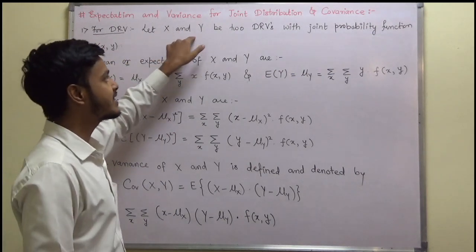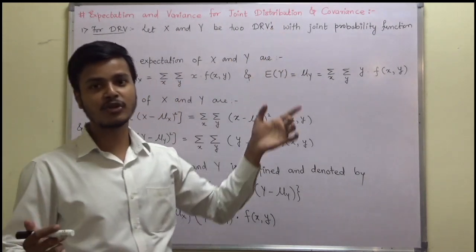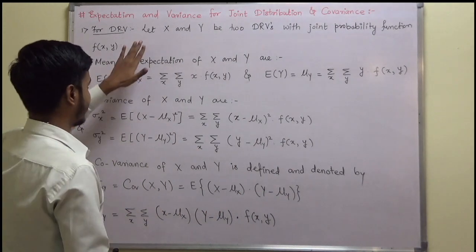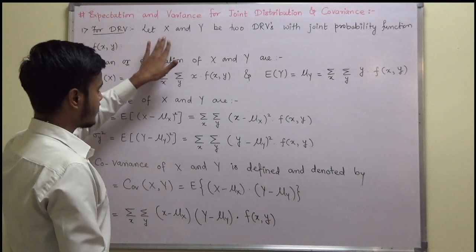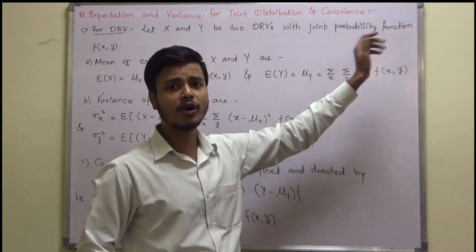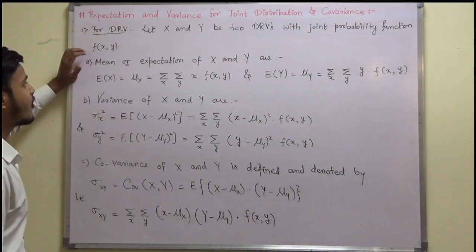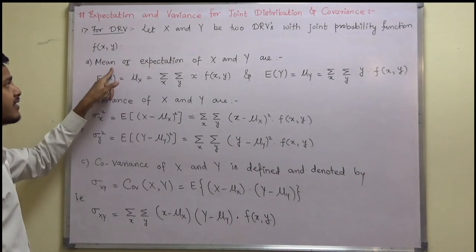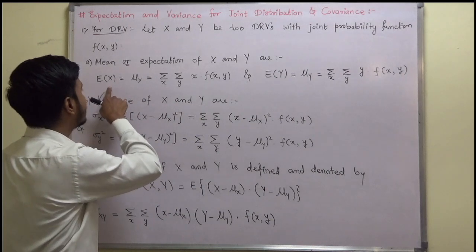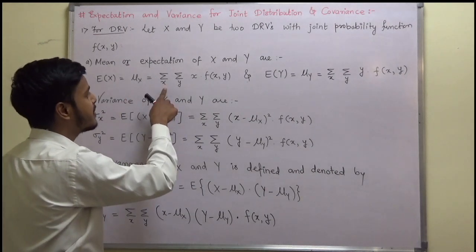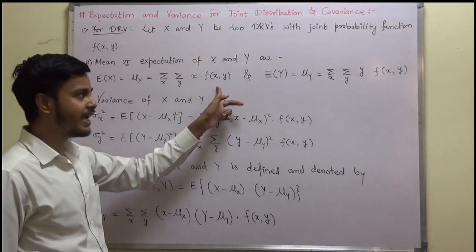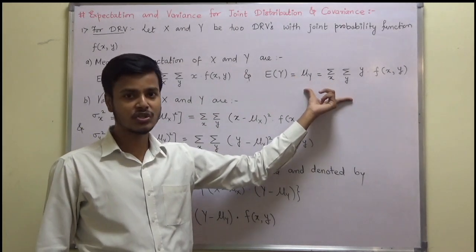If x and y are two discrete random variables — and as you know, for joint distribution we need more than one random variable — so if these are the two discrete random variables with joint probability function f of x, y, then the mean or expectation of x is defined as: expectation of x equals summation over x, summation over y, x times f of x, y. And likewise you can define the expectation of y.